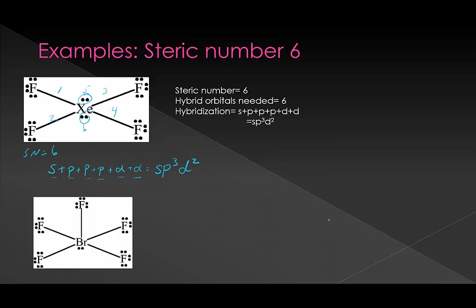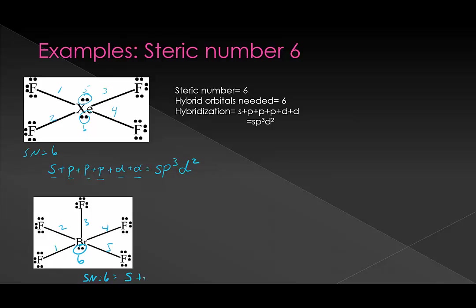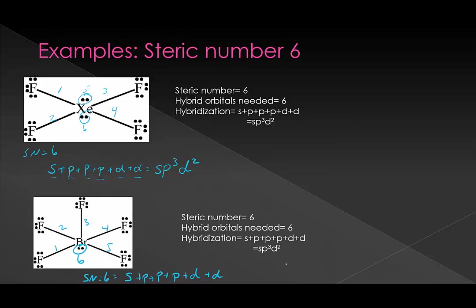The next example is similar, except we only have one lone pair. We count up our steric number and get six. We count up our orbitals: if we use all of our p orbitals, we're still only at four, so we need to add two d orbitals. We're at sp3d2 again.